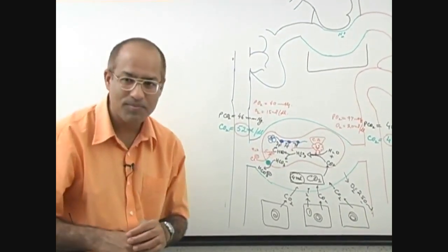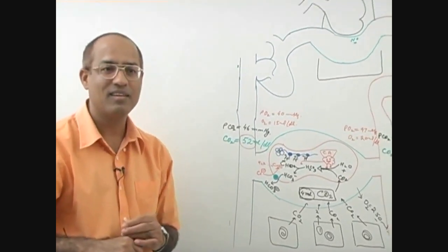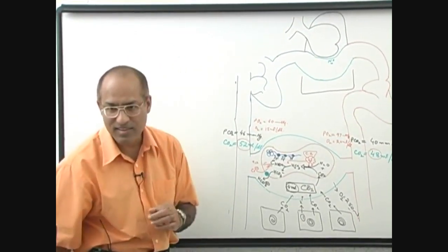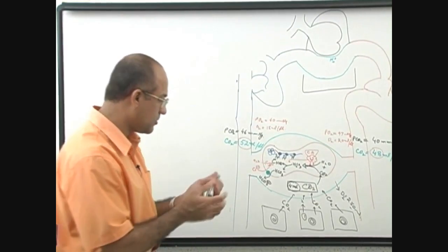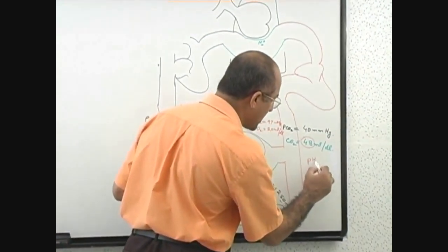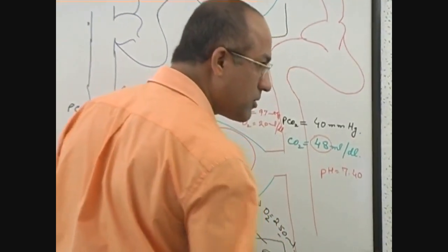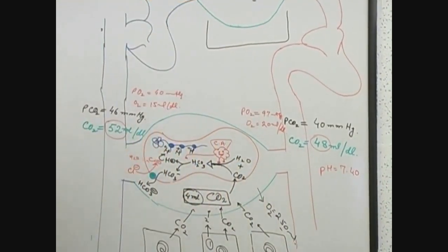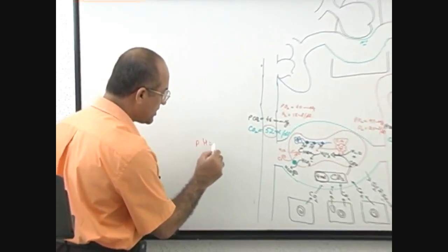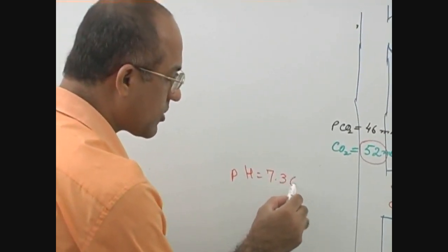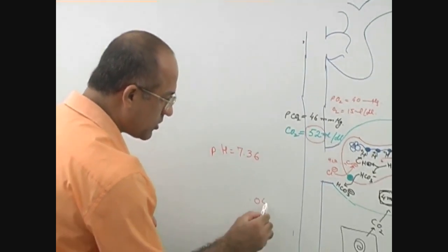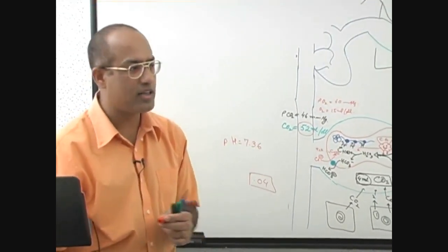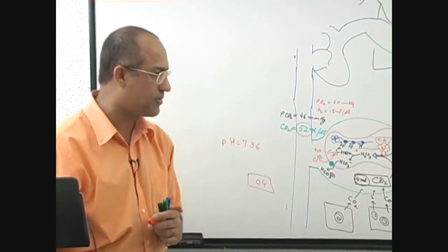Because hemoglobin is buffering protons. Believe me, if hemoglobin does not buffer the proton, venous blood pH will be really very acidic. Thank god it is little acidic. You must be knowing pH on arterial blood is normally 7.40, and pH on venous side is 7.36. The real difference is 0.04 between arterial and venous side normally. So there's a little difference in proton concentration, not big difference.